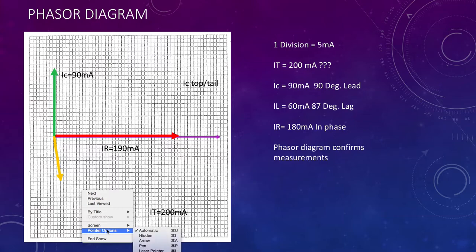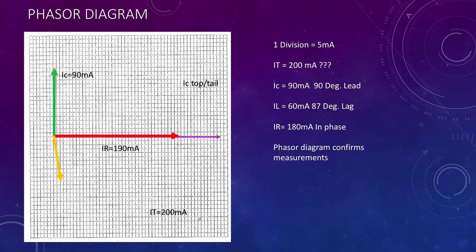We had 90 milliamps of current through the capacitor and it's at 90 degrees lead. Here's our 90 degrees and the length of the phasor. Our resistor is 190 milliamps, scaled out to give us the red phasor.